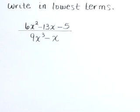Write in lowest terms: 6x squared minus 13x minus 5, all over 9x to the third minus x.